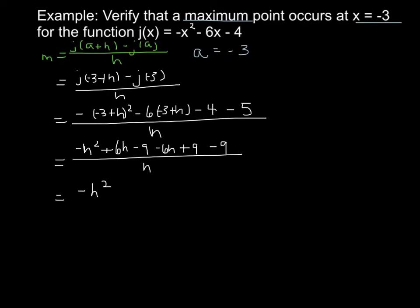So I have negative h squared. We have plus 6h minus 6h, so these subtract out. And I have minus 9 and plus 9 here. So all I have is this, and that's over h.